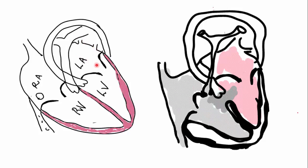From the left atria, it would then go across the mitral valve into the left ventricle and the oxygenated blood would get pumped into the body through the aorta. So that's your normal circulation. You can see the right ventricular mass is much more than the LV.